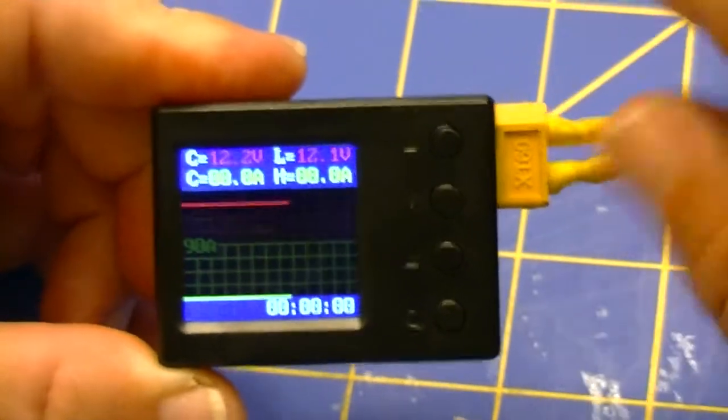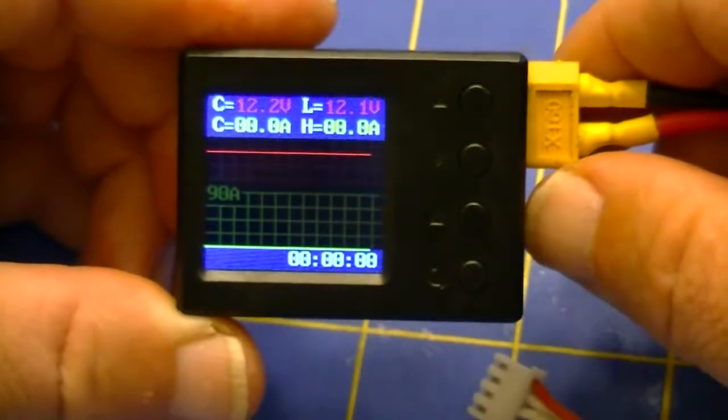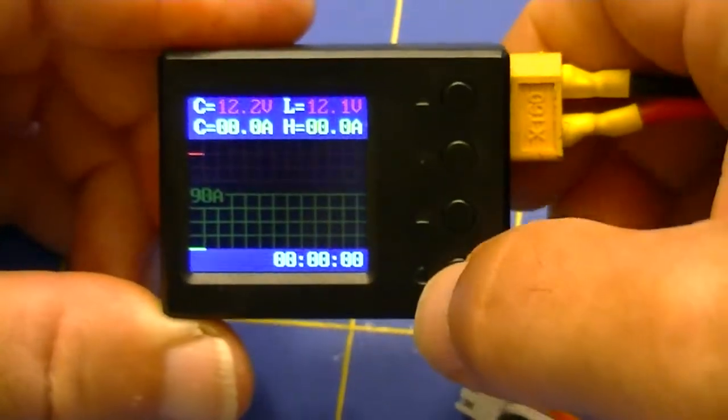This is the logging mode, and I'll show it to you in a moment. Just connecting a battery with no load shows the logging function, but of course with no load I'll always read zero amps.